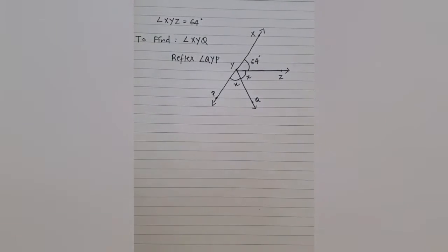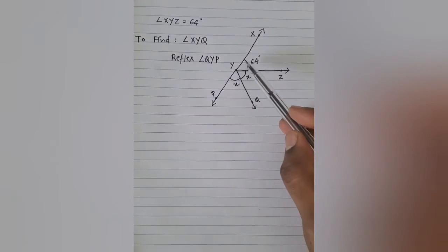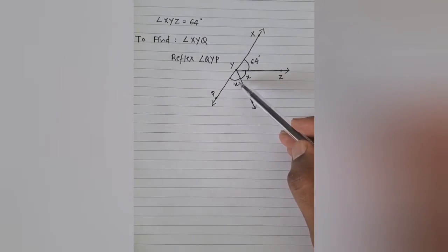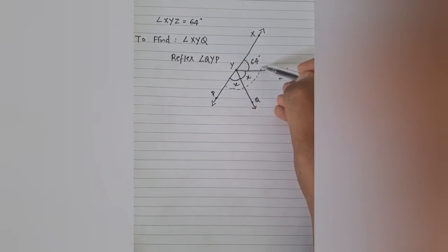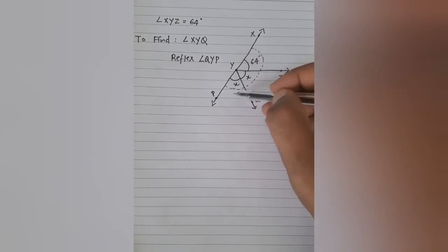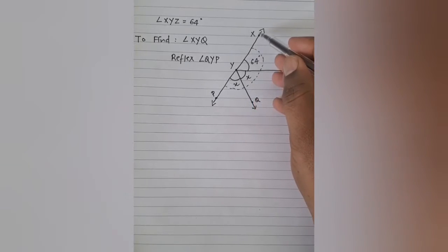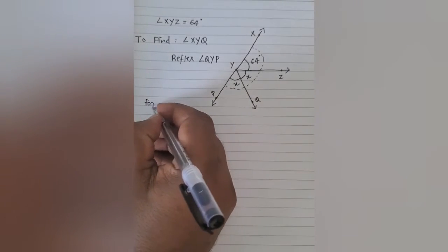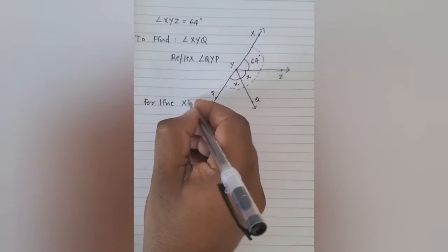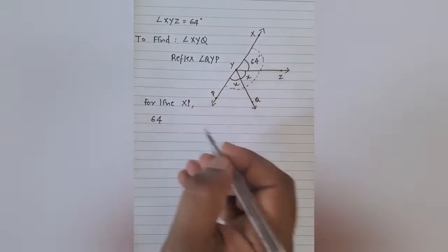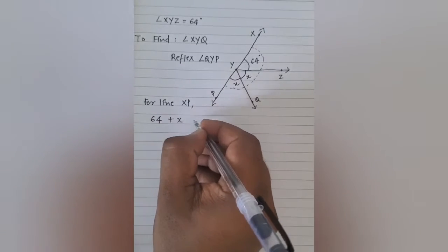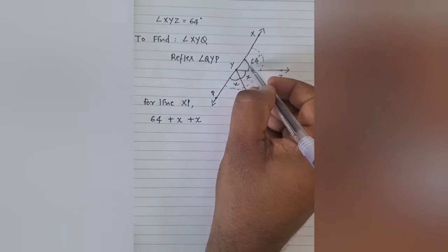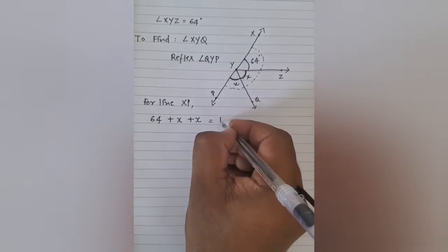Now, irrespective of how I would get the answer, as my approach was in the previous questions, I would go by what has been given. So with all the data that has been given, what I can conclude is that the total of this side of the line should be equal to 180 degrees, because XP is a straight line. So can I mention that for line XP: 64 plus x plus x, that is these three angles, will be equal to 180 degrees?